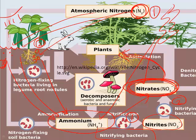We also have decomposer bacteria. Decomposer bacteria convert nitrogen trapped in the proteins and DNA of dead animals back to ammonium. When plants and animals die and begin to rot, it's decomposer bacteria doing the work — converting nitrogen compounds from proteins and DNA into ammonium, which can then enter the nitrifying pathway to create nitrites and finally nitrates that plants can reuse.